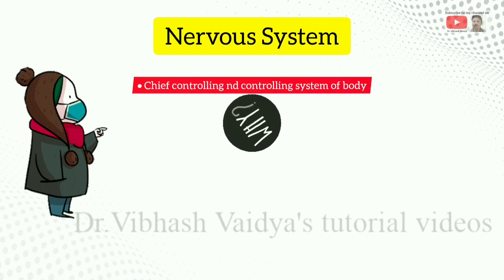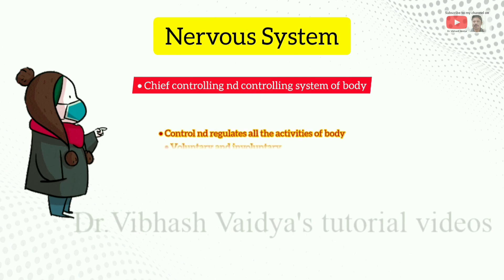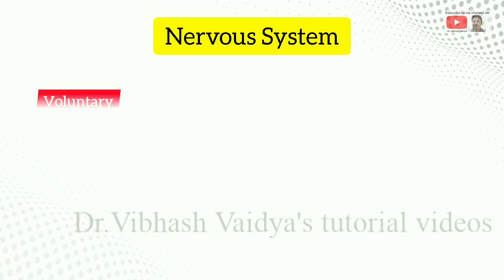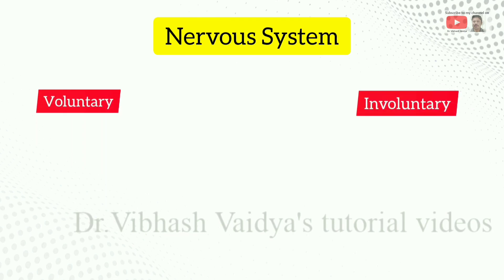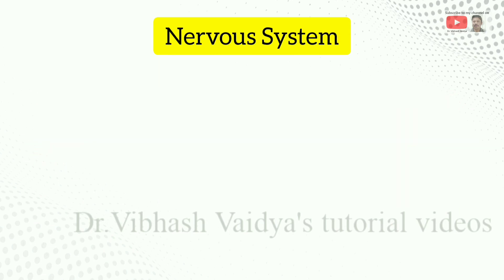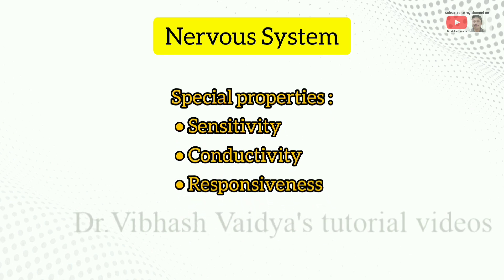It is called the Chief Controlling and Coordinating System because it controls and regulates all activity of the body, both voluntary as well as involuntary. Voluntary means which is controlled by ourselves and by command. Involuntary means which is controlled automatically. The Nervous System is based on the special properties of sensitivity, conductivity, and responsiveness.